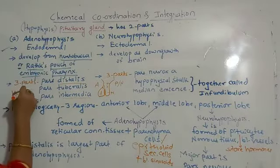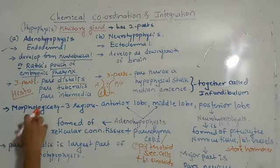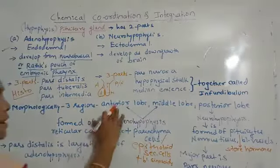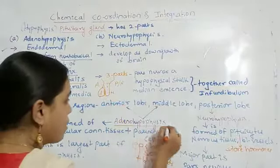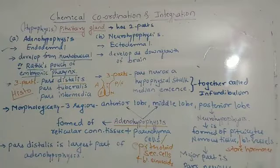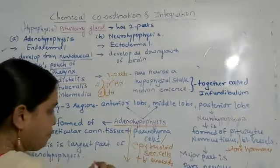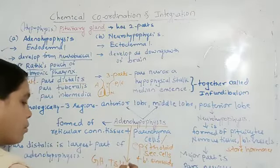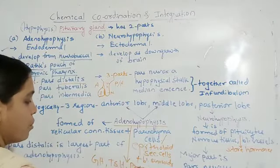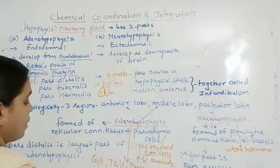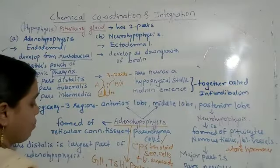Morphologically, there are three regions: the anterior lobe, middle lobe, and posterior lobe. The anterior lobe and middle lobe together form the adenohypophysis, and the single posterior lobe is the neurohypophysis. The anterior lobe secretes hormones including growth hormone, thyroid stimulating hormone, prolactin hormone, adrenocorticotrophic hormone, and gonadotrophic releasing hormone.